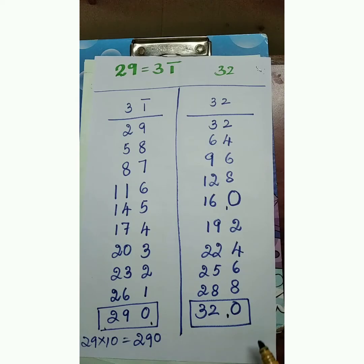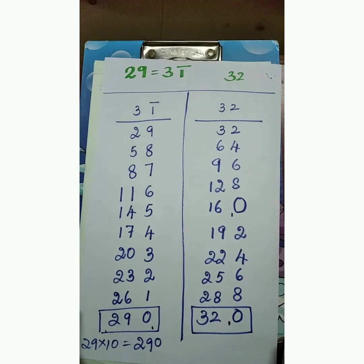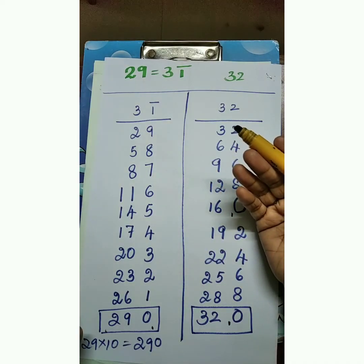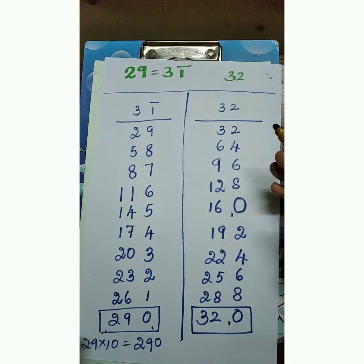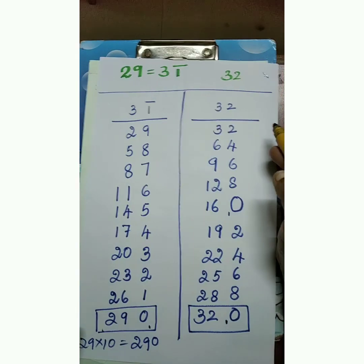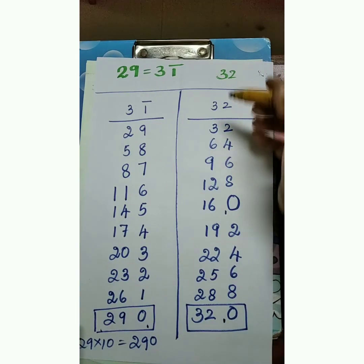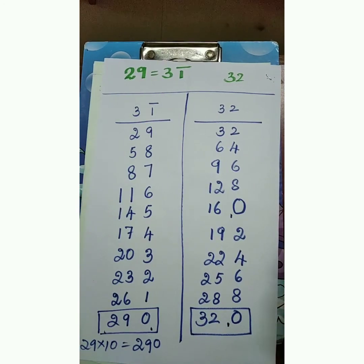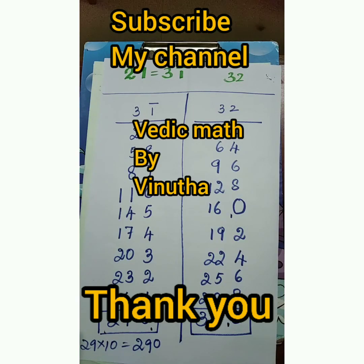So, easily we can write the tables. If the unit place digit is more than 5, convert into vinculum form. If the unit place digit is less than 5, do not convert into vinculum form. Follow this method, and you can easily apply it in regular mathematics. Thank you for watching my video. Please subscribe to my channel. Have a nice day.